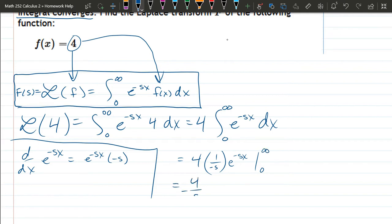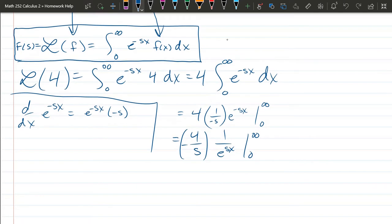So I'm going to write this as negative 4 over s as the constant times 1 over e to the sx. And I just use a negative to reciprocate here. Now, before we plug in infinity, we're going to write this as limit b approaches infinity, negative 4 over s, 1 over e to the sx from 0 to b.